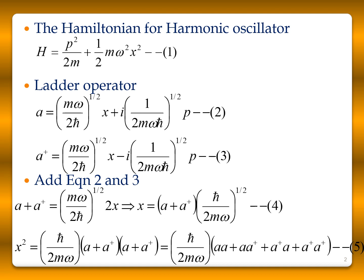Adding these two equations, a + a† = (mω/2ħ)^½ · 2x. From this we can calculate x = (a + a†) · (ħ/2mω)^½.